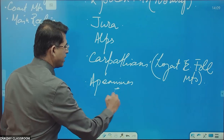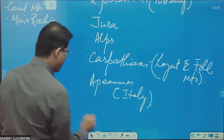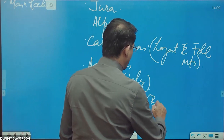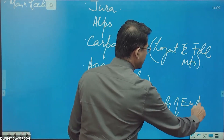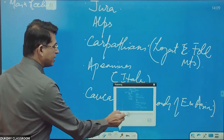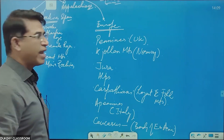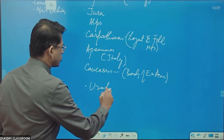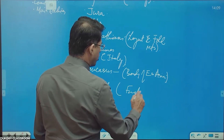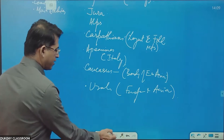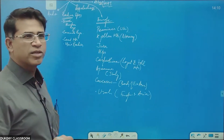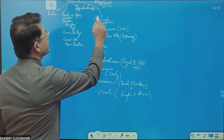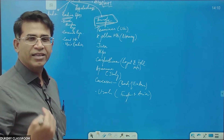We have the Carpathians, which are the longest European fold mountains. We have the Apennines, which are in Italy. We have the Caucasus Mountains at the boundary of Europe and Asia. You can also add the Urals here — the Ural Mountains in Russia are also on the boundary of Europe and Asia.